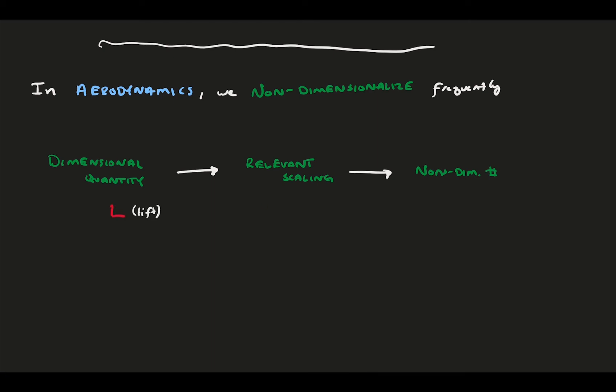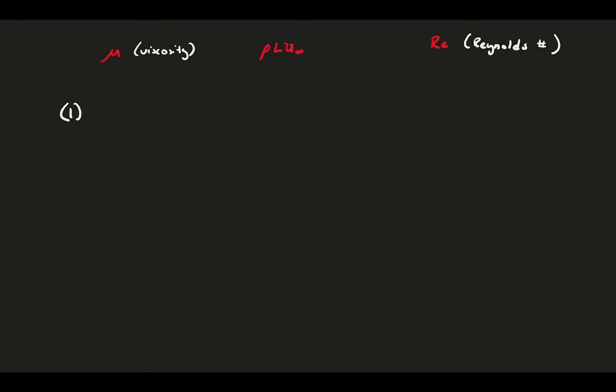First, we have the lift force. If we divide this by a relevant scaling, which we'll discuss later in this video, we get the lift coefficient, something we'll see all throughout aerodynamics. Next, we have the flow viscosity. If we normalize the flow viscosity by something else in the flow, like its inertia, we get the Reynolds number, which specifically tells us how important viscosity is in that given flow situation. Now, let's more formally introduce the lift, drag, and moment coefficients, which are the most prominent non-dimensional numbers in aerodynamics.